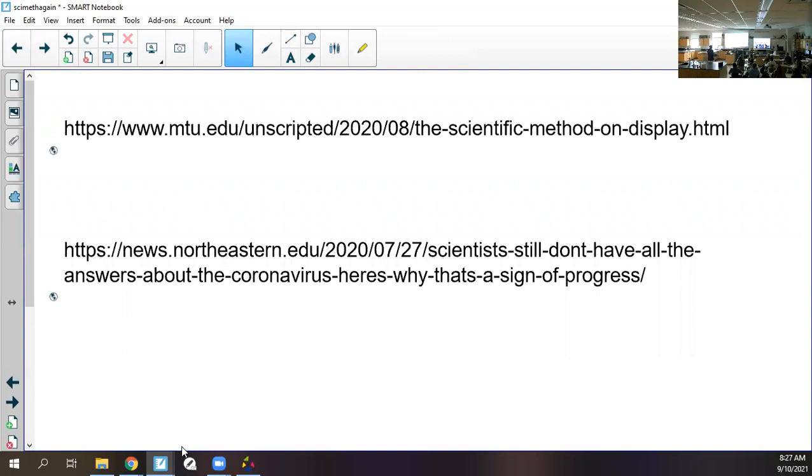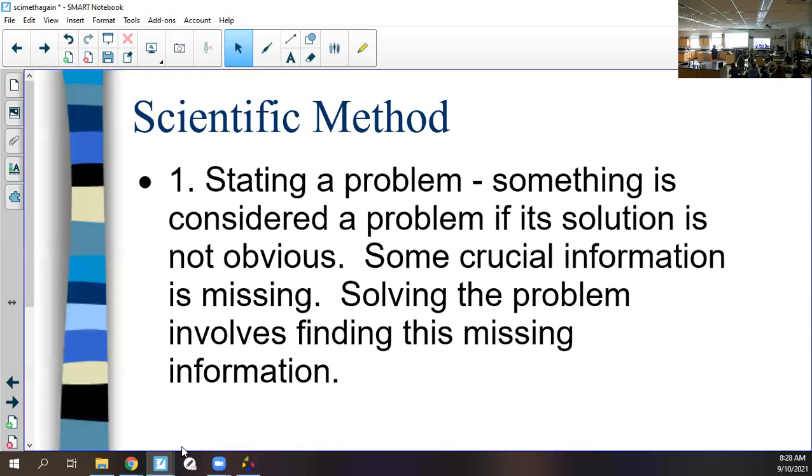Please, if you get anything from today's discussion, realize that science gets new information and we have to change based on that. All right, there's two articles here. This one talks about how the whole last year and a half has been a good display of how the scientific method works—that it's messy, collaborative, and can change. This one says scientists still don't have all the answers about the coronavirus, and that's a sign of progress. We don't just jump to conclusions and leave them. We adjust based on experimentation and observation.